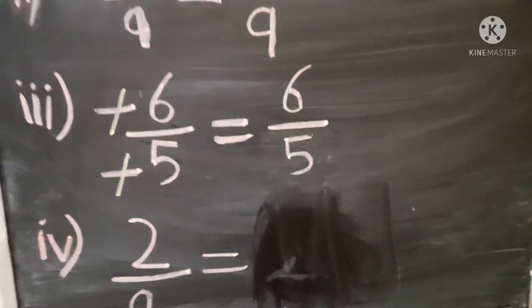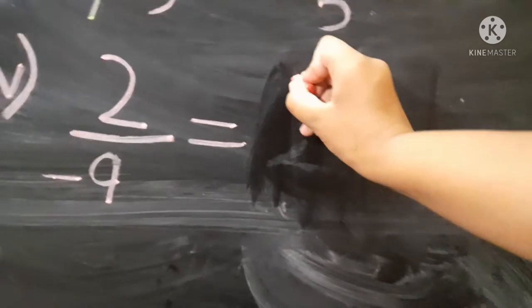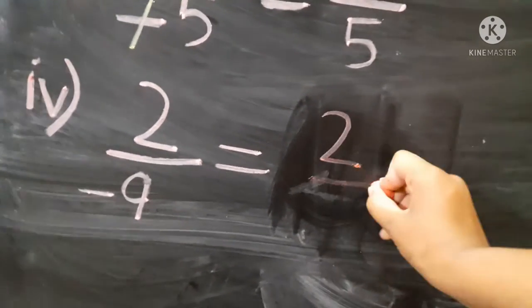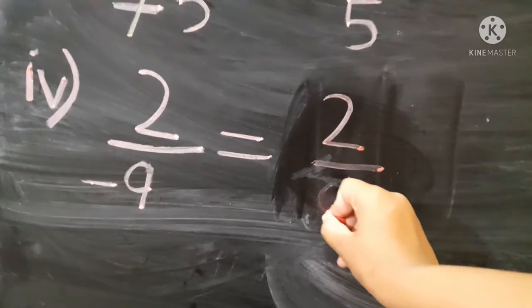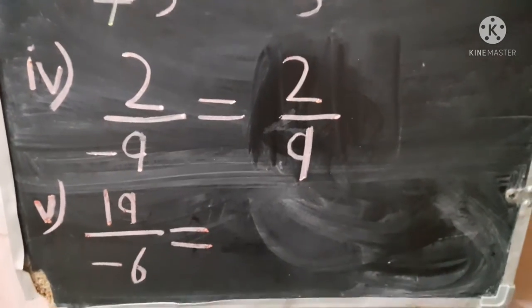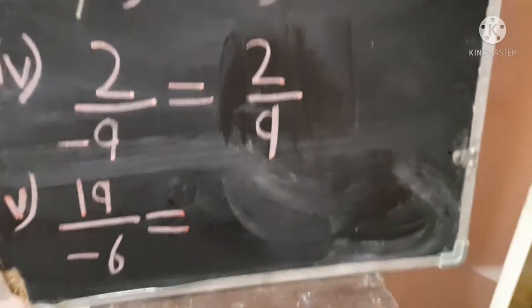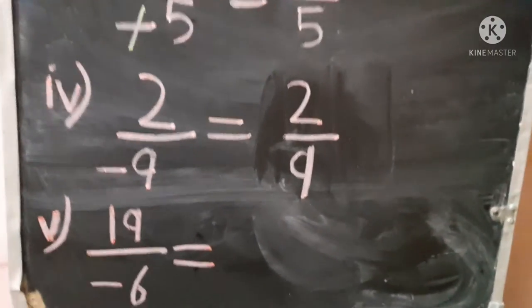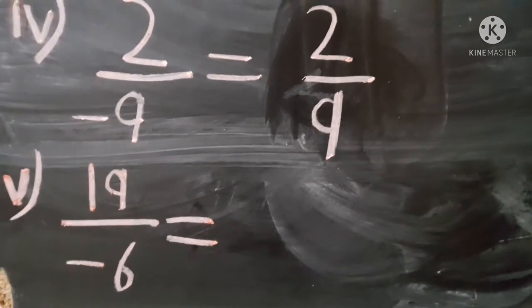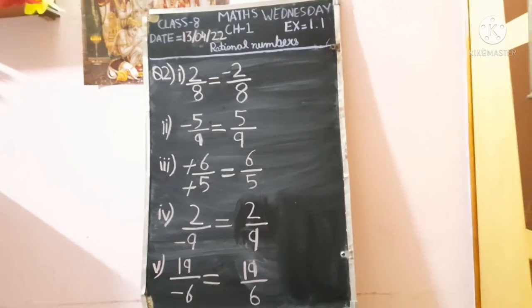Friends, this is our fourth part: 2 upon minus 9. The additive inverse of 2 upon minus 9 will be 2 upon 9. Our fifth part is 19 upon minus 6. It is in negative, and so the additive inverse will be positive 19 upon 6.